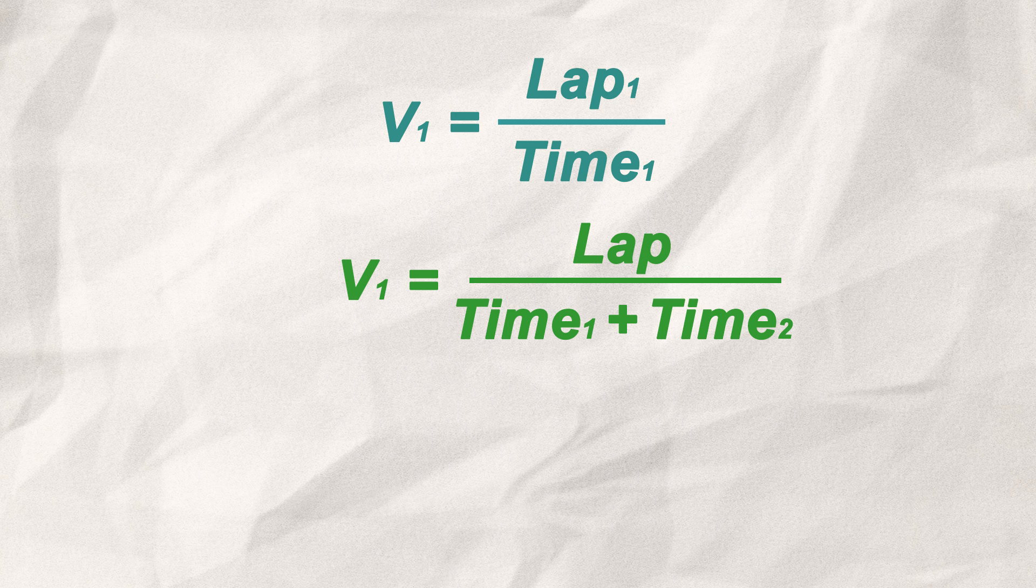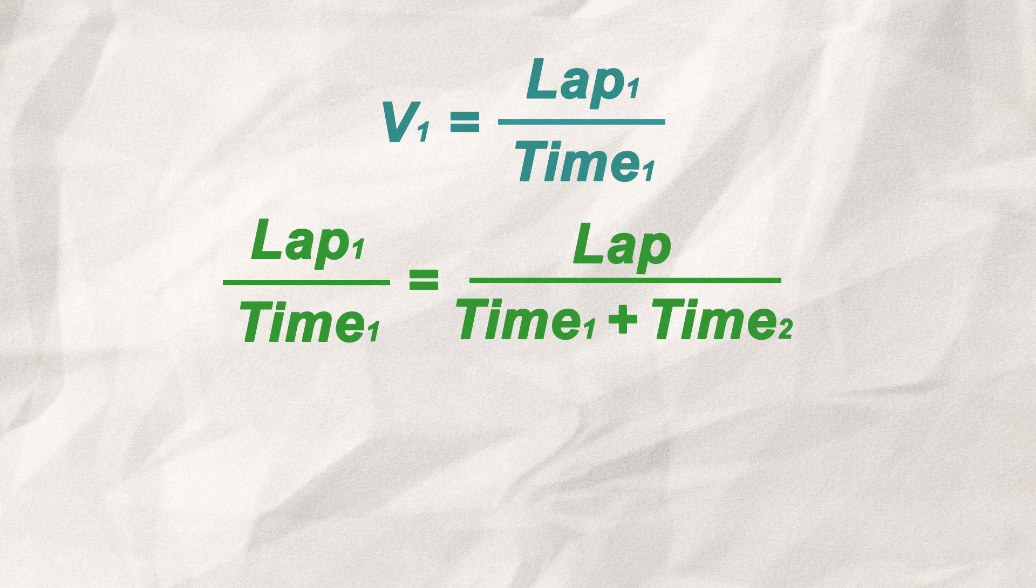Now I can remove the 2 to get V1 equals lap divided by my total time. Since we know already that V1 is equal to lap divided by time 1, I can write it like this. And now the problem starts. To make this equation true,